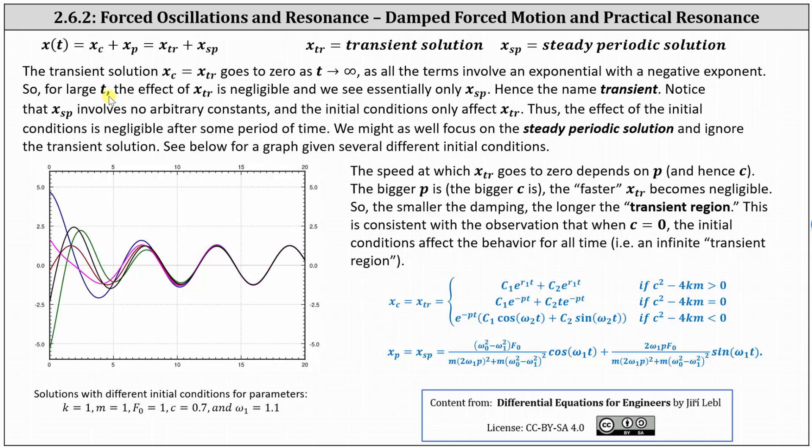So for large t, the effect of the transient solution is negligible and we see essentially only the steady periodic solution, hence the name transient. Notice that the steady periodic solution involves no arbitrary constants, and the initial conditions only affect the transient solution. Thus the effect of the initial conditions is negligible after some period of time.